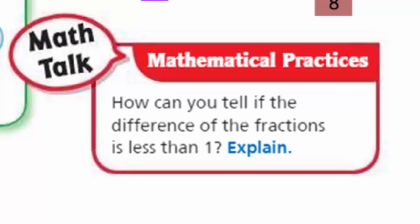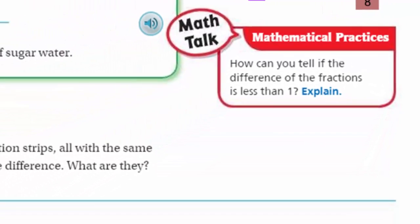Now looking at the mathematical practices, the math talk: how can you tell if the difference of the fractions is less than one? That's a really good question. The easiest way here, if we have a fraction like three-quarters, if it's already less than one, then subtracting a number that is less than one gives the answer that's less than one. We found that the difference of three-quarters and one-eighth was five-eighths.